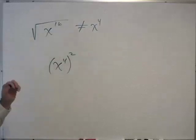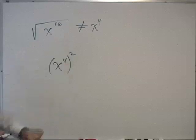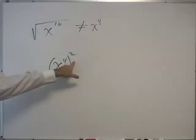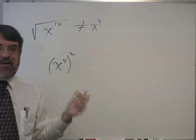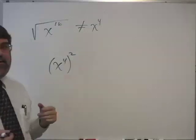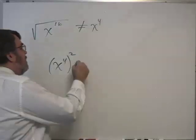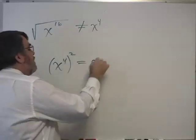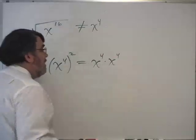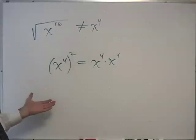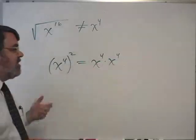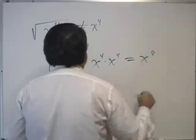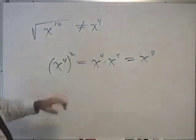Hopefully you remember the rule of exponents. When I raise a power, I multiply: two times four equals eight. Or if you're not convinced, x to the fourth squared is x to the fourth times x to the fourth. In this case we add exponents and get x to the eighth.